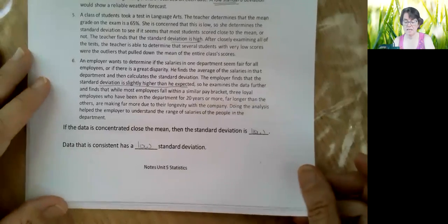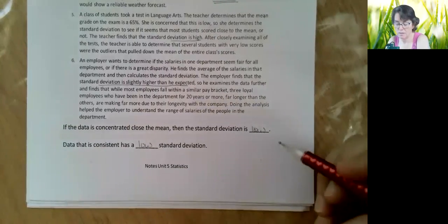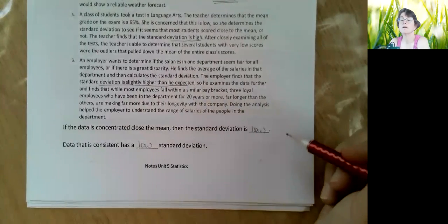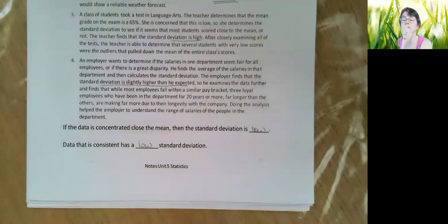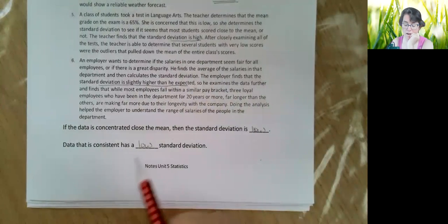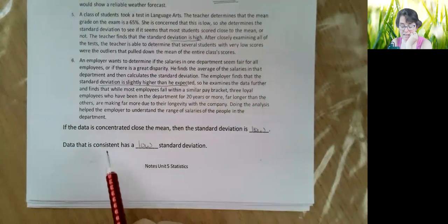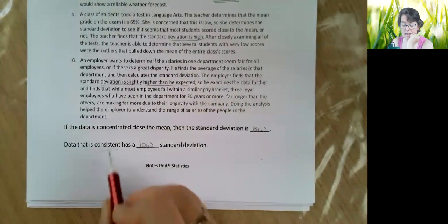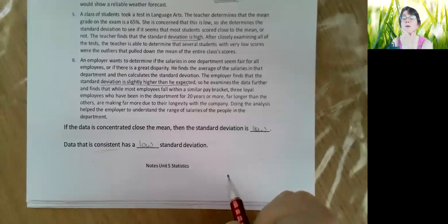And big takeaway from this very bottom here: If the data is concentrated close to the mean, then the standard deviation is low. So if it's a low standard deviation, you're close to wherever the mean is. If it's a high standard deviation, it's spread out more. And data that is consistent—and that's a really key word—has low standard deviation. So if the weather forecaster is forecasting consistently, which means, you know, his answer is he's within a degree or two of what it's supposed to be, then that's going to be a low standard deviation. Remember that.